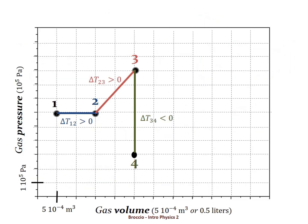So in summary the first temperature change from 1 to 2 was positive, the second was also positive and the third one was a temperature drop.